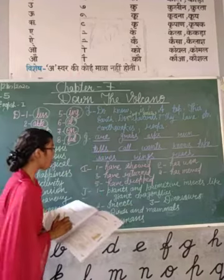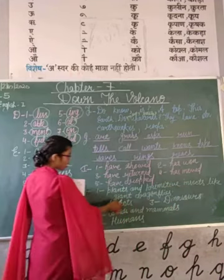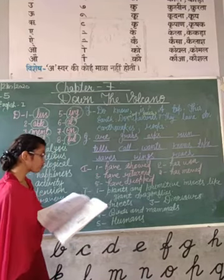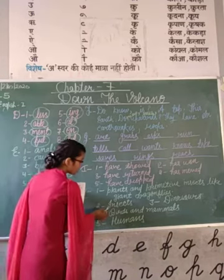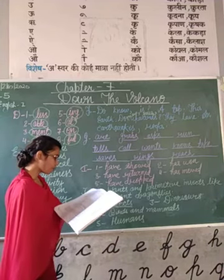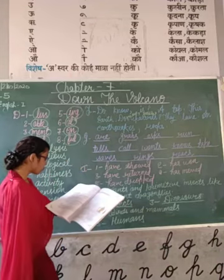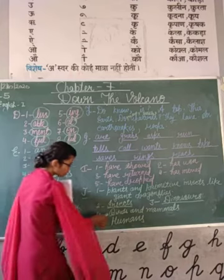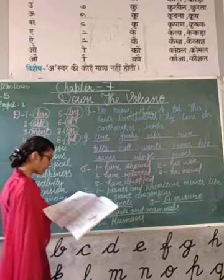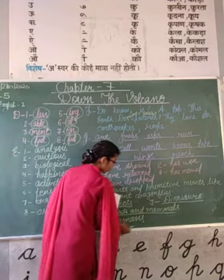Now let's move to the question answers. Question 1: Which insects were the first to live on land? Answer: Plants and primitive insects like giant dragonflies. Question 2: Which creatures developed wings before birds appeared? Answer: Insects. Question 3: Which reptiles ruled the earth for more than 200 million years? Answer: Dinosaurs. Question 4: What are the dominant life forms on earth today? Answer: Birds and mammals. Question 5: Which creatures appeared on earth only 2 million years ago? Answer: Humans.